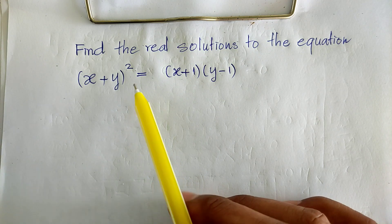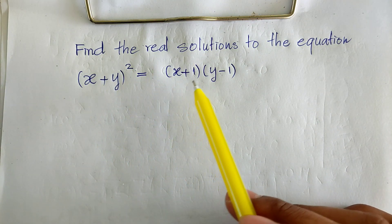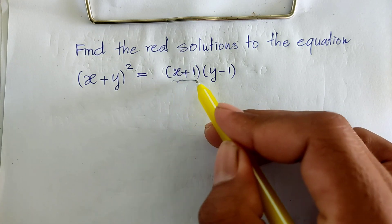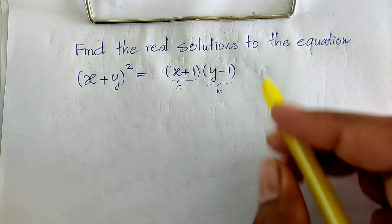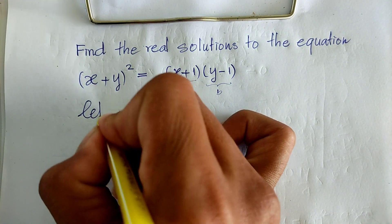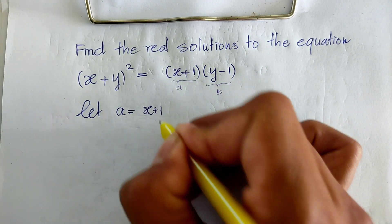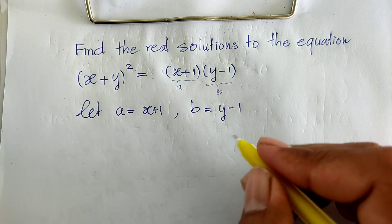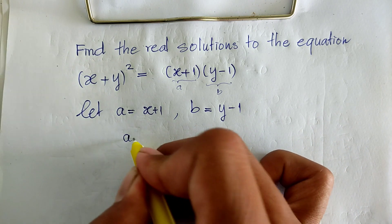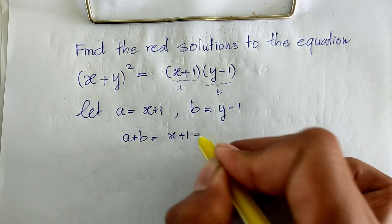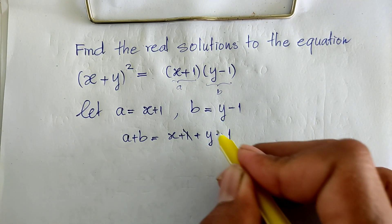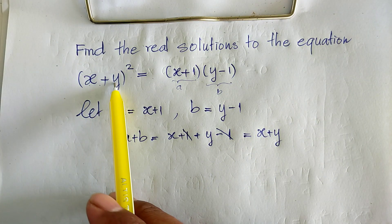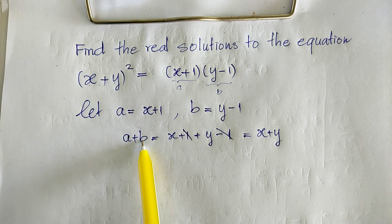Okay, we have an equation with two variables. Let's solve this using a substitution. Let a equal h plus 1, and b equal y minus 1. So we get a plus b equals (h plus 1) plus (y minus 1), which equals h plus y. So h plus y we replace by a plus b.